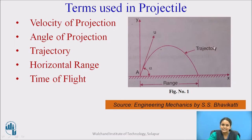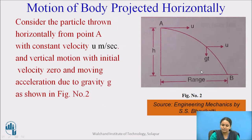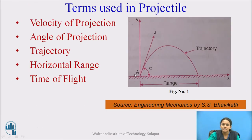The next term is trajectory — it is the path traced by the particle. If you observe this figure, when you throw the particle u in an upward direction, it will trace a path: at some distance it will go upward and then come back down to the horizontal surface, tracing a curved path. This curved path is called the trajectory.